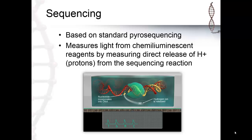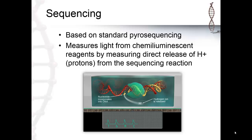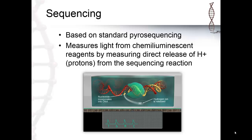While the error rates are generally pretty good at about 1%, pyrosequencing chemistry has trouble with long homo-polymers, which are stretches of the same base. Because the chemistry doesn't pause after each base incorporation, stretches of the same base result in a single, stronger signal. While short stretches can be differentiated, it becomes increasingly difficult with longer stretches.